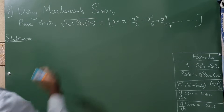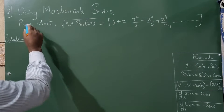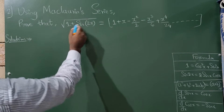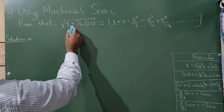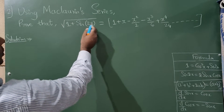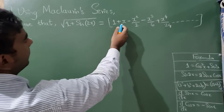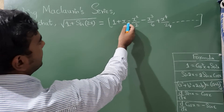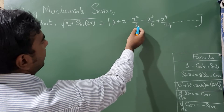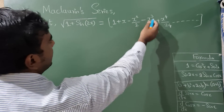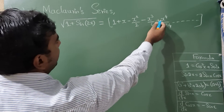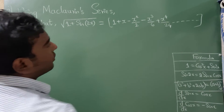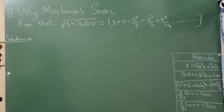Using the Maclaurin series, prove that √(1 + sin 2x) = 1 + x − x²/2 − x³/6 + x⁴/24.